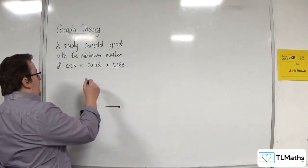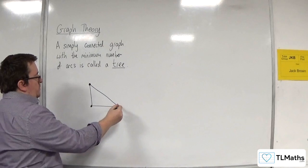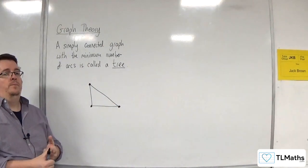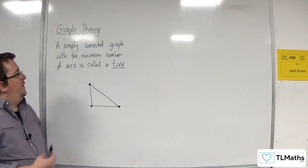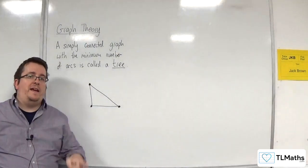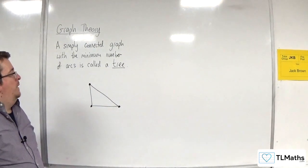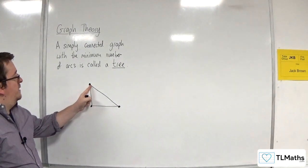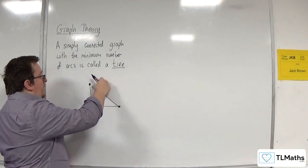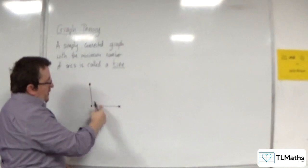And the other thing that we must consider is that if I joined up those two, this is connected, it is simple, but it is not a tree. Because a tree requires us to use the minimum number of arcs available in order to join those three points up. We don't need an arc going from this vertex straight to this vertex because there is a path from this vertex to the other one. It just goes this way.